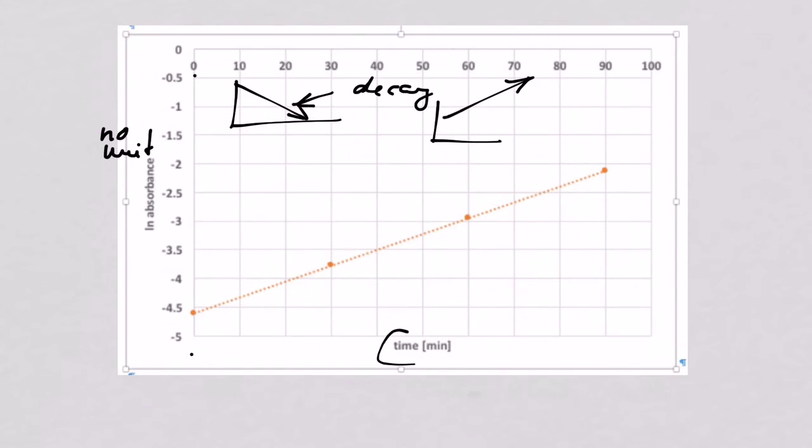You of course need to have proper axis labels, so time in minutes. Wherever I saw something like that I deducted some marks because the order of the axis was in the wrong position. Now all you really needed to say is that it is a straight line and therefore it must be a first-order reaction. If you have drawn an absorbance versus time graph you didn't get any marks because that doesn't tell you whether it's a first-order reaction or not.